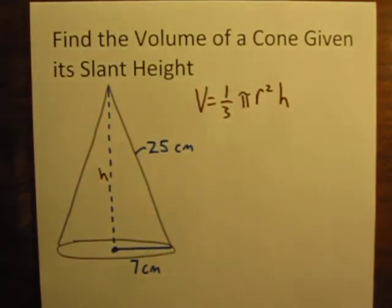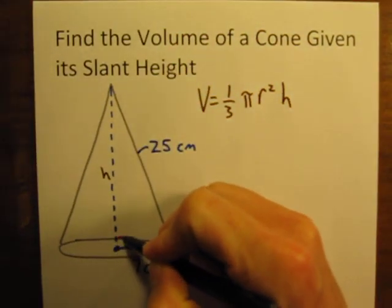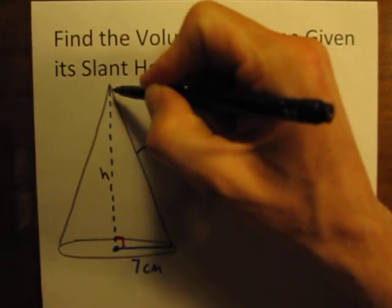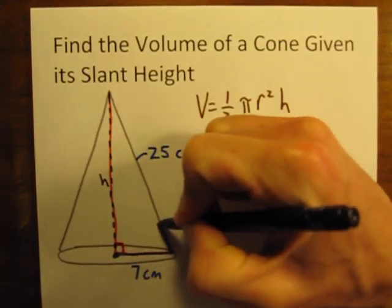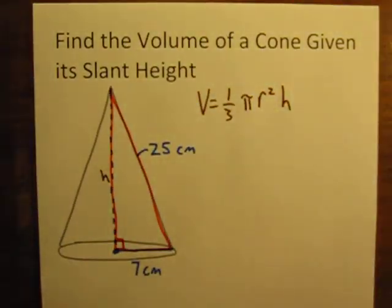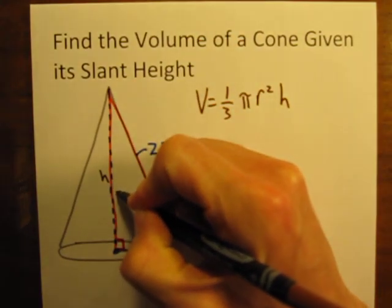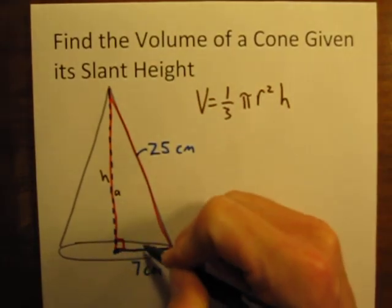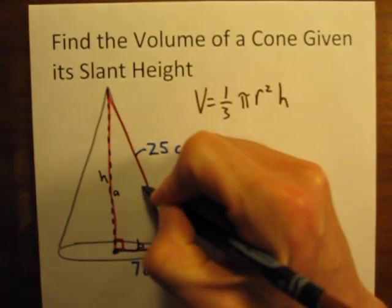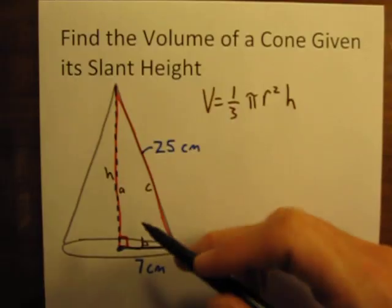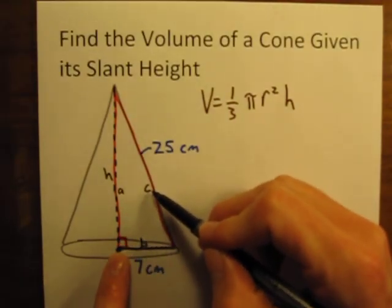And it really is not that difficult because this height meets the base down here forming a right angle. So what we really have is we have a right triangle formed right here, where the height is maybe we can call that a, the radius down here is another leg. A and B are the legs of this right triangle, and the hypotenuse is C. The hypotenuse is always the side directly across from the right angle. So that's side C.